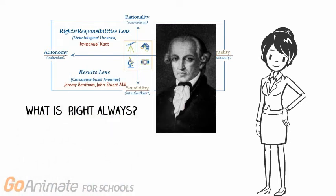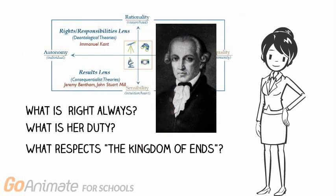One key question that you would ask yourself from a Kantian perspective is, what is right always? You might also ask yourself, what is Louisa's duty? Louisa might also consider what would respect people's rights to be kingdoms of ends. In other words, not be used for anybody else's gain or for any other purpose.